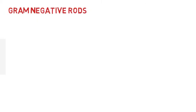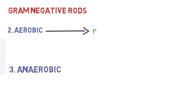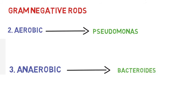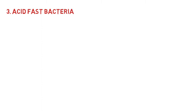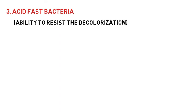The Gram-negative rods are also divided into aerobic and anaerobic classes. The aerobic class includes Pseudomonas aeruginosa, and Bacteroides is an anaerobic Gram-negative rod. The third subdivision of free-living bacteria is acid-fast bacteria. It is a physical property that gives the bacterium the ability to resist decolorization by acids during staining procedures, and this class includes Mycobacterium.